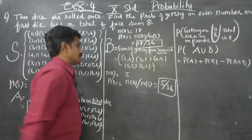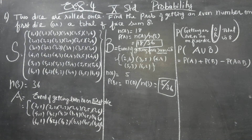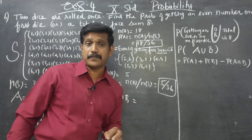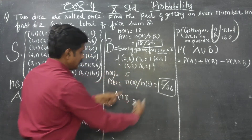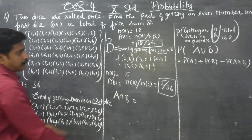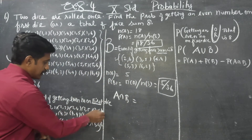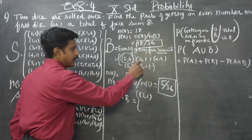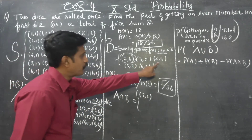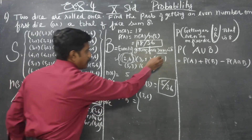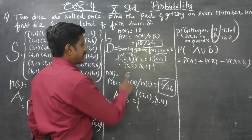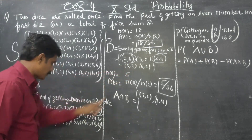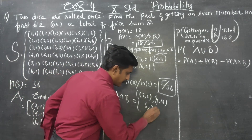P(A) is ready: 18/36. P(B) is ready: 5/36. Now we find A∩B — the common elements between set A and set B. Checking: (3,5) — no; (4,4) — yes, that's common; (5,3) — no; (6,2) — no.